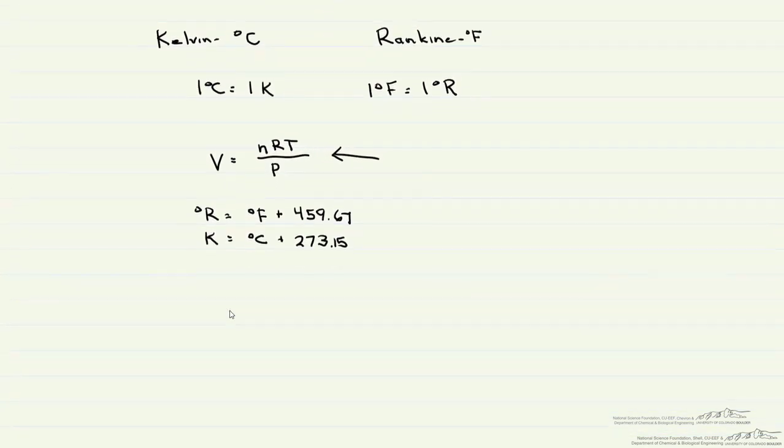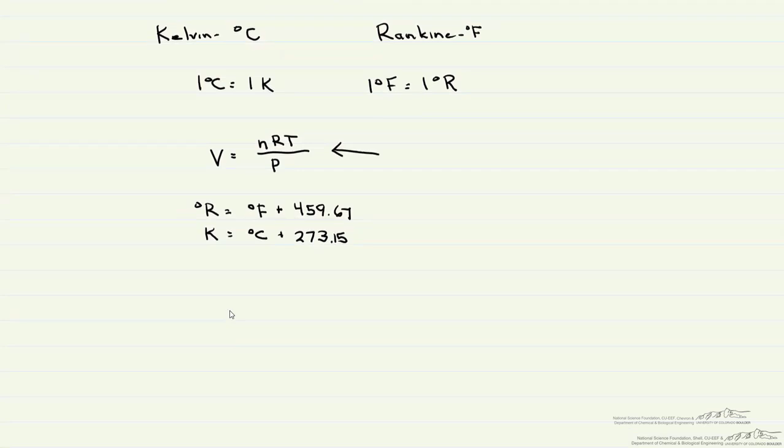One equation that you'll encounter later is Antoine's equation to find the vapor pressure or saturated pressure. This is written that PSAT is equal to 10 to the A plus B over T plus C, where A, B, and C are constants that correspond to what substance you are, and temperature is in degrees Celsius. You can see from this, if you use Kelvin instead, you're going to get a completely different answer.